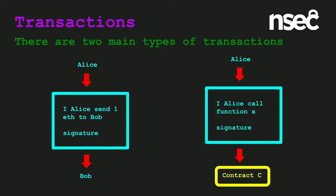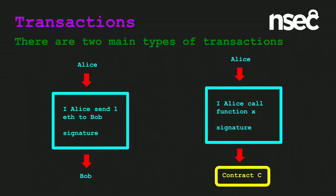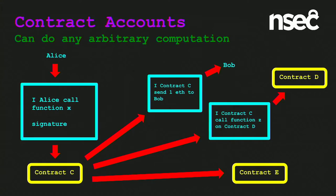When you're interacting with the Ethereum blockchain, you do so by sending a transaction. There are two main types of accounts: external accounts, which map onto people or private key/public key pairs, and contract accounts, which contain code. We have two major types of transactions: simple ones, like Alice sending some ether to Bob, and more complex transactions where Alice is calling a function on contract Z. Contracts can do any arbitrary computation — dispensing ether, calling functions on other contracts, or creating other contracts.